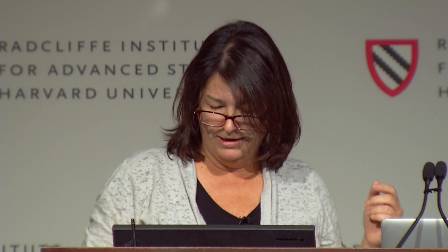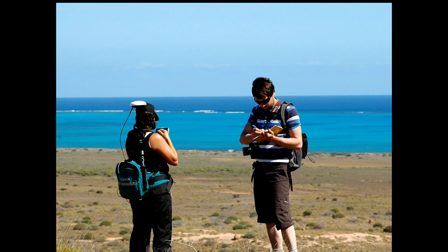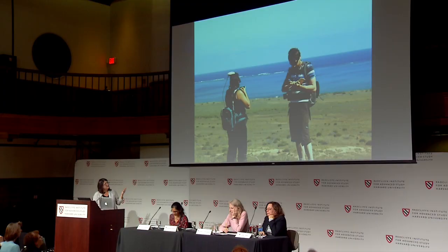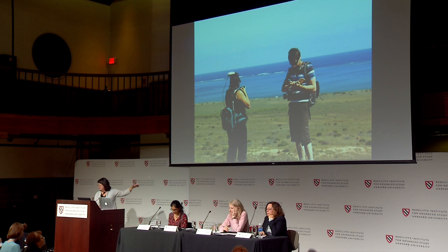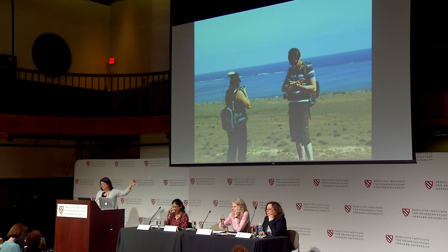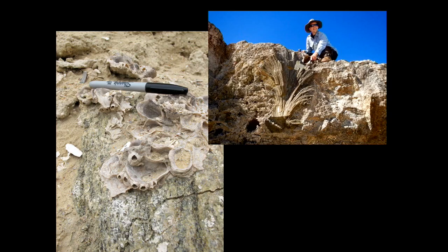How high was sea level during some of these little periods in the past that were just slightly warmer than today? The evidence for higher sea levels during the recent past is all around us. This is me standing with my postdoc Nicole Leary on a stranded fossilized reef in northwest Australia — probably about 400,000 years old from a time period that was slightly warmer than today. And here is a fossilized coral from the last interglacial warm period, 125,000 years ago, a few meters above present-day sea level.